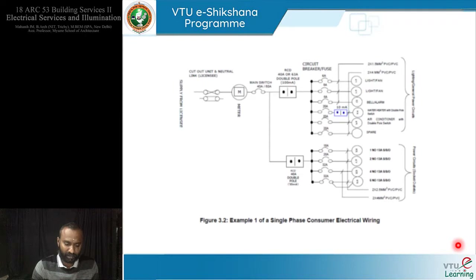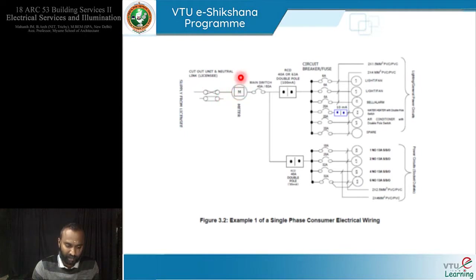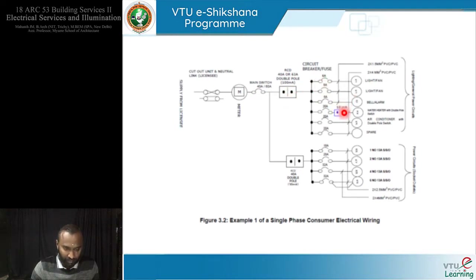This is a borrowed image showing supply from incoming, supply from the government. Basically, we have this meter here, and according to our requirements we have this meter and a main switch with some ampere rating. Then we have RCD — residual current device. They have combined this RCD with 6 amps and 12 amps, which is basically for the lighting circuits, bell, fan, and all that. Over here, they have combined all the sockets.